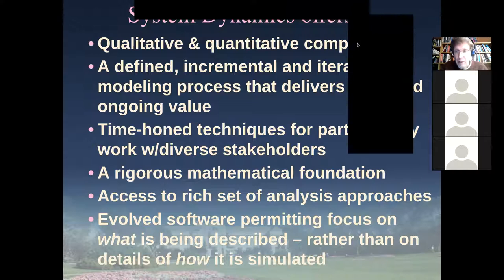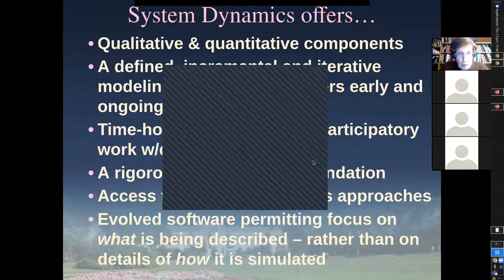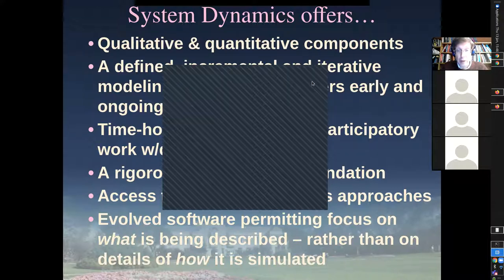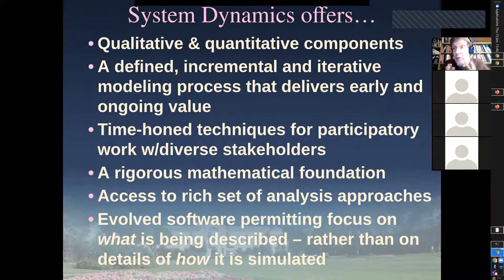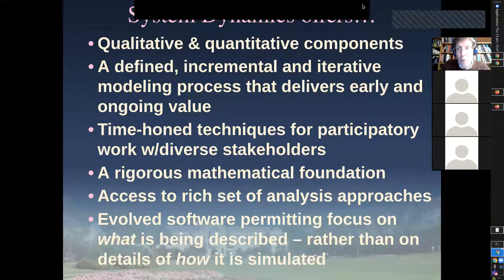A chat question asked: where does edge case data fit — where you give the model a starting value which is then altered? That would be considered an endogenous value. If it's being altered over time by the model, the model is generating it, so it's almost invariably an endogenous quantity. Generally, that's what we do: we give the model an initial value and then it evolves over time. That's what a dynamic model does — it has some initial state and then it evolves.